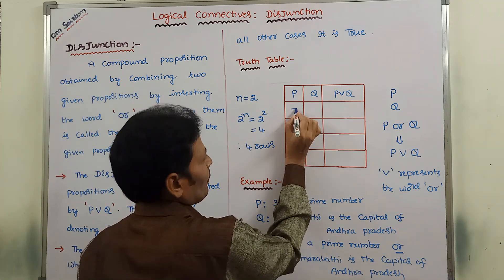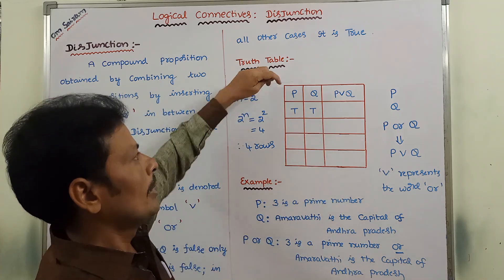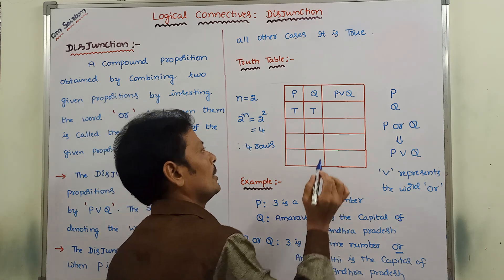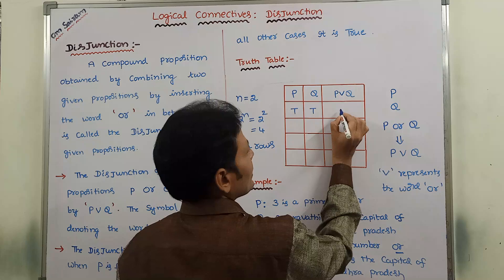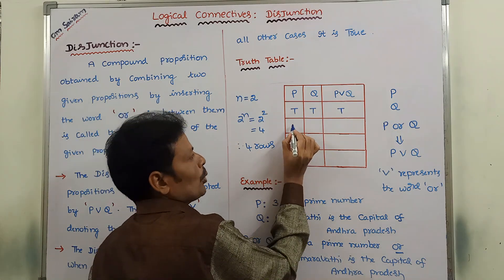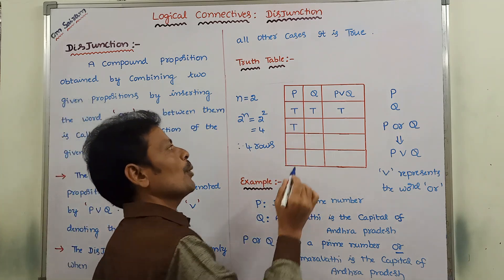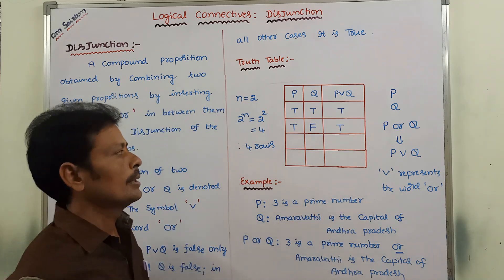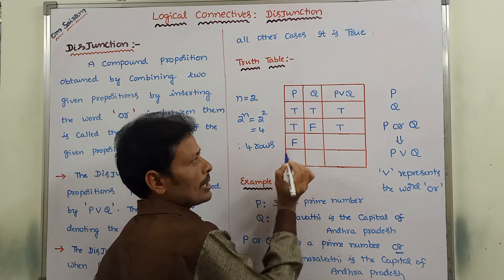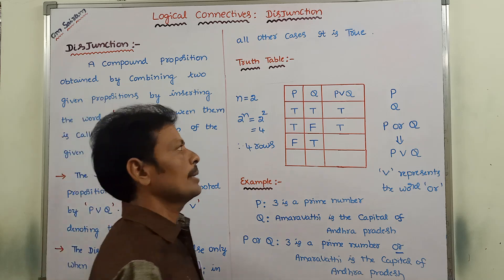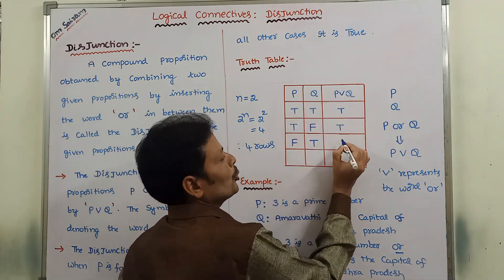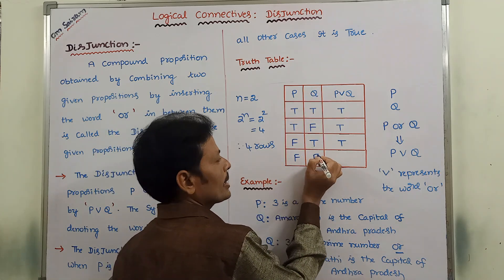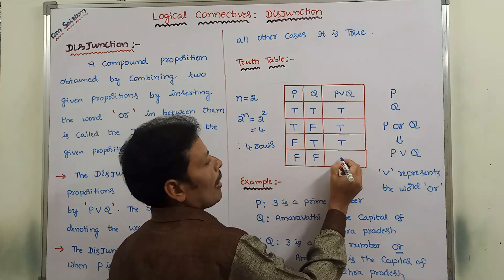When both propositions P and Q are true, the truth value of P OR Q is true. When P is true and Q is false, the truth value of P OR Q is true. When P is false and Q is true, the truth value of P OR Q is also true. When P is false and Q is false, the truth value of P OR Q is false.